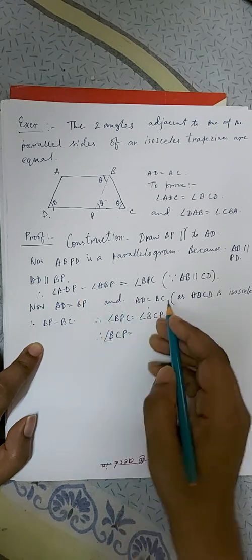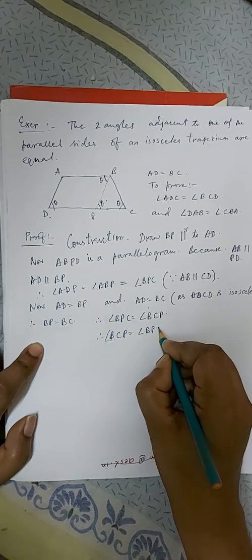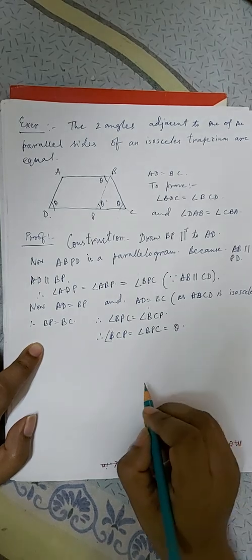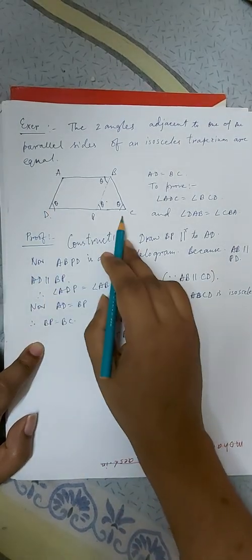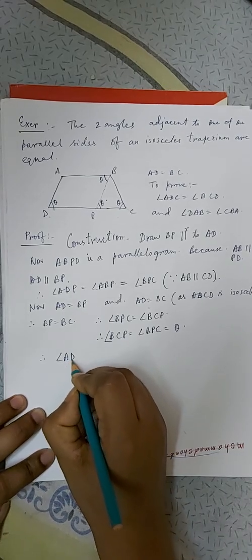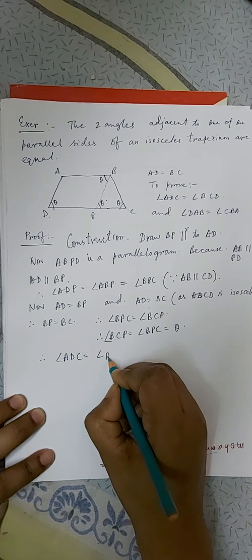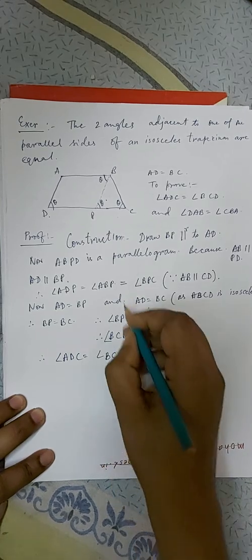BC is theta. BPC is theta. So this is also theta. What does it mean? Angle ADC equal to angle BCP. Now BCP is BCD.